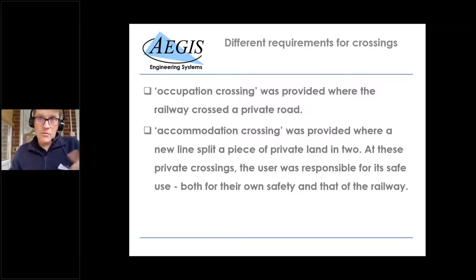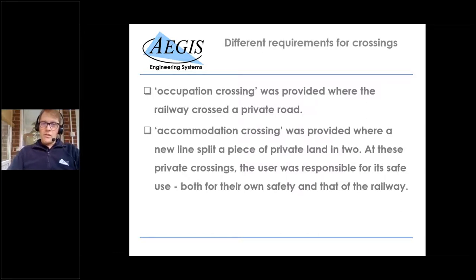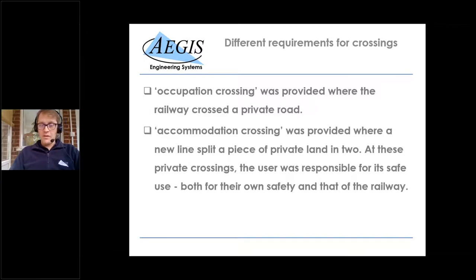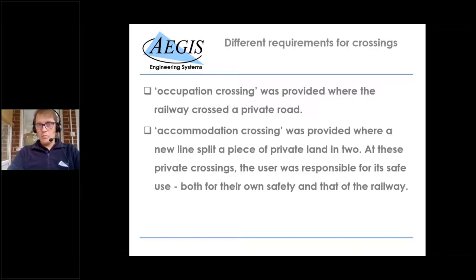There are different types of level crossings. Occupation crossings were provided where the railway crossed a private road, and accommodation crossings were provided where a new line split a piece of land in two. At private crossings, the user is responsible for safe use. Both operate very similarly but have different legal standings depending on which type they are.